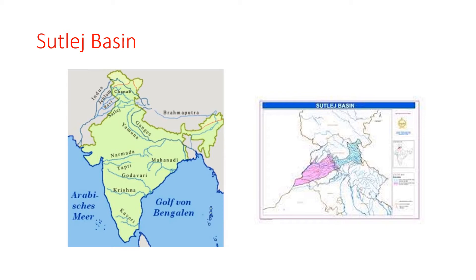The Sutlej River Basin: the Sutlej and the Beas flow in the southwest direction. They join the Indus River in Pakistan, which then flows into the Arabian Sea. Less than one third of the Indus Basin is situated in India, in the parts of Jammu and Kashmir, Himachal Pradesh, and Punjab. It is about 2,900 km long, and its primary tributaries include the Sutlej, Beas, Ravi, Chenab, and the Jhelum.